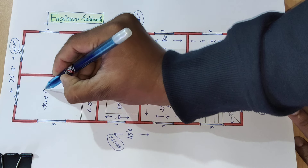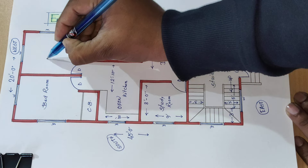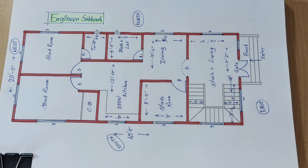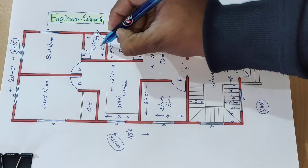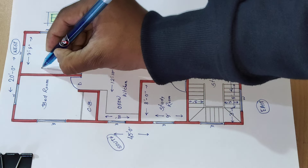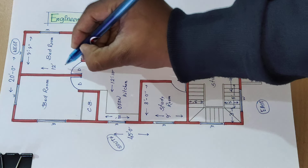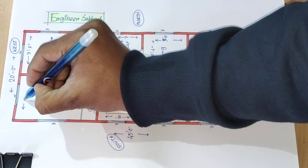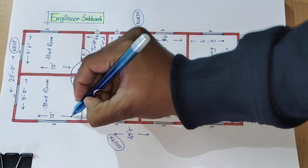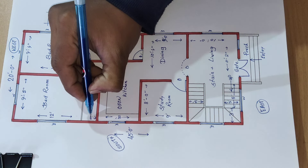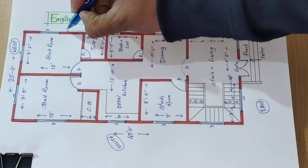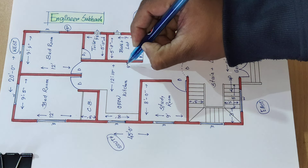Bedroom. Next bedroom. 5 feet 11 inch. 9 feet 4 inch. 12 feet, 12 feet, 12 feet. Cupboard, 3 feet, cupboard provide. Outside wall, 5 inch wall.